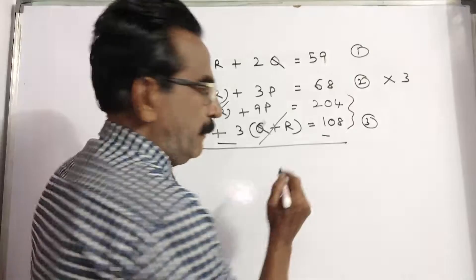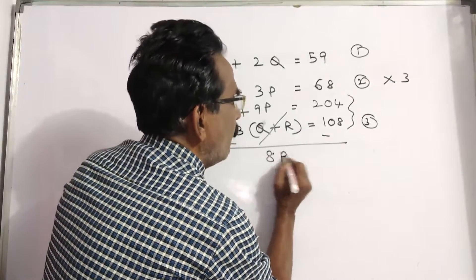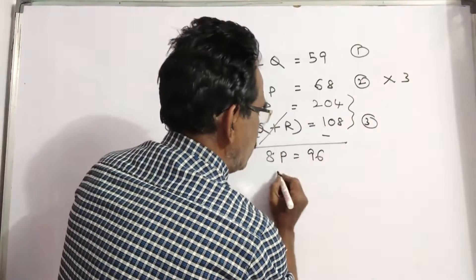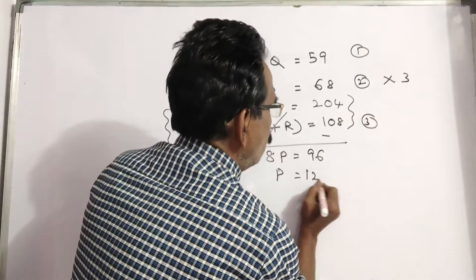6P minus P is equal to 5P. Wait, 9P minus P is equal to 8P. 8P is equal to 204 minus 108, which is 96. P is equal to 12.